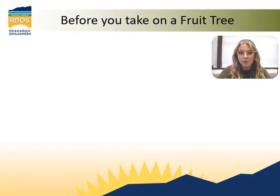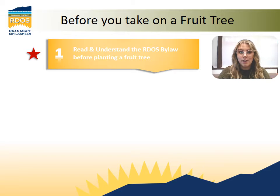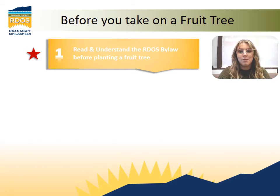Before planting a fruit tree, or even if you have just inherited a fruit tree during a recent move, it's important to understand these five essential tasks before taking it on. The most important thing is to understand the RDOS bylaw that is on the RDOS webpage for fruit tree pests. It states the responsibility of the homeowner to prevent and control insect pest infestations, and explains the steps that occur if there is a complaint about your fruit tree. This is important to understand because if there is any negligence to general care and pest prevention, an insect infestation can affect the livelihood of neighboring commercial orchards.